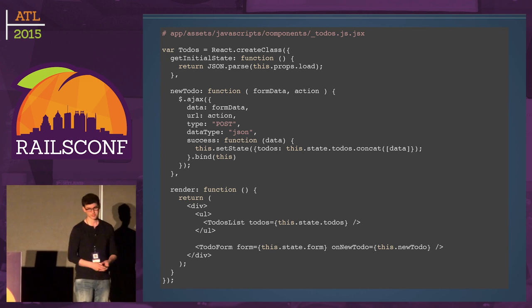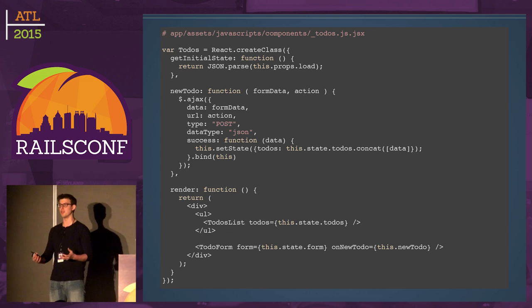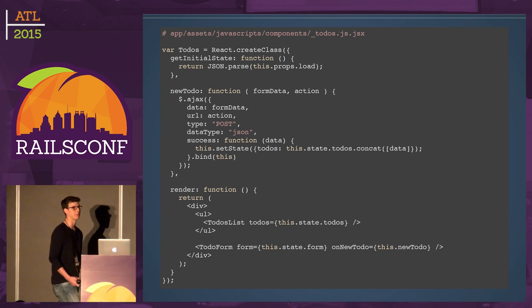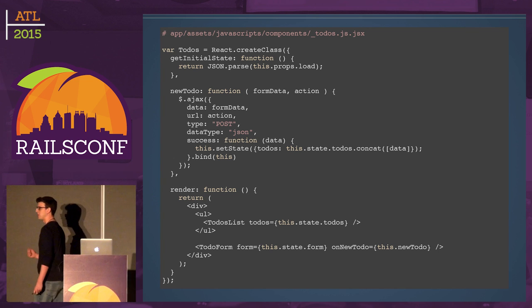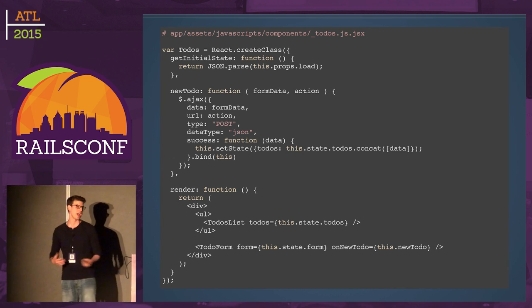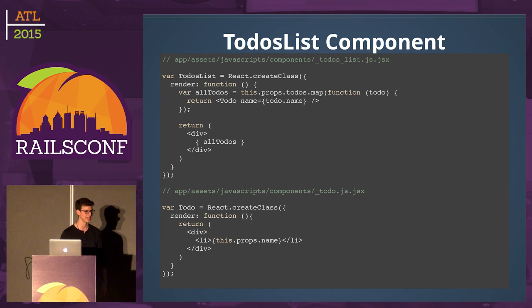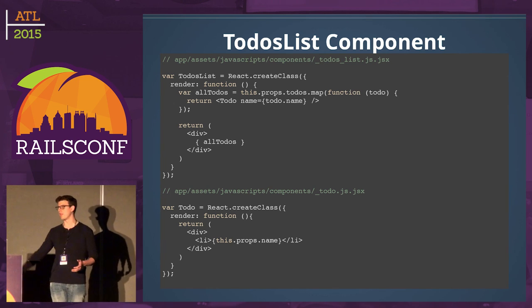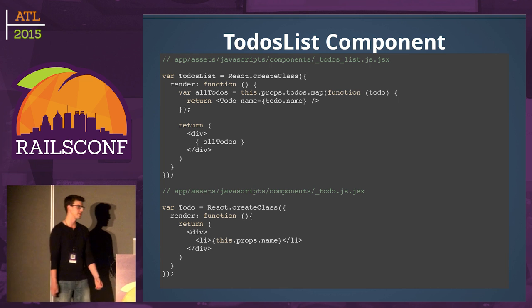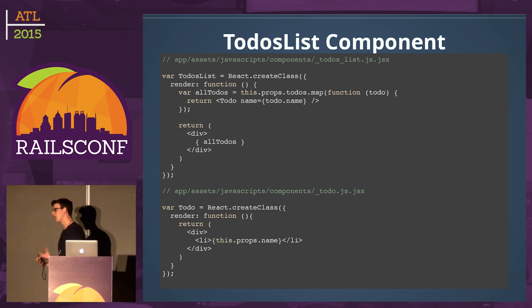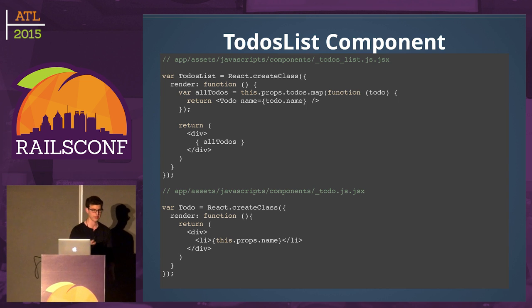The render function is the only required function in a React component. What you see looks like HTML but it's actually JSX — an optional syntax that allows you to specify views in what looks like HTML but is really JavaScript code. We set up a div, iterate over the list, and create two components: a TodoList component holding the actual list, and a form component. We pass each the properties it needs. The TodoList maps over the todos and creates individual Todo components — each just a list item.